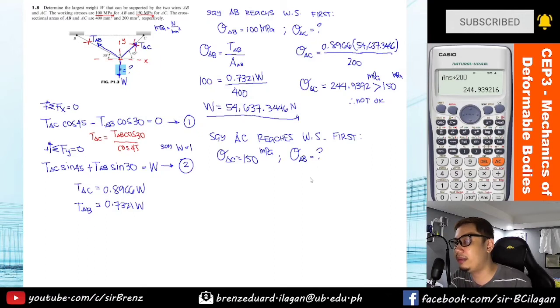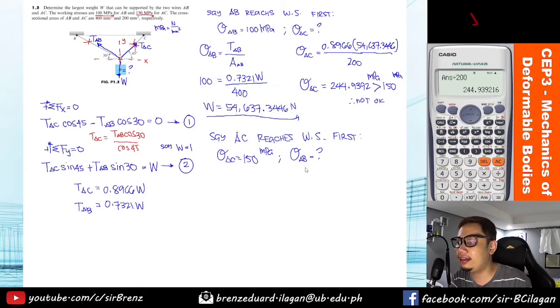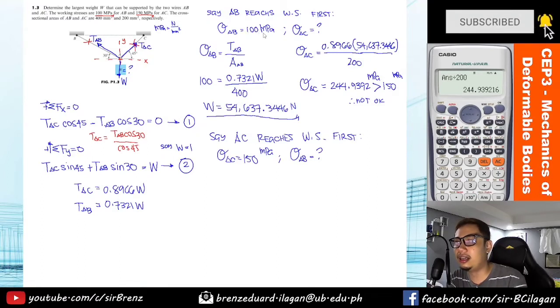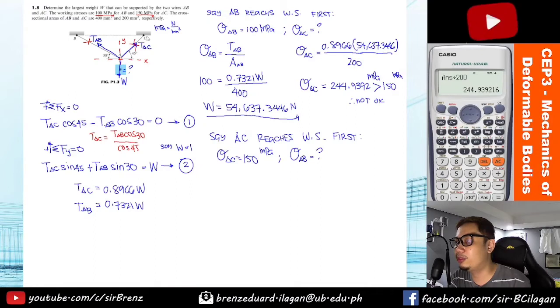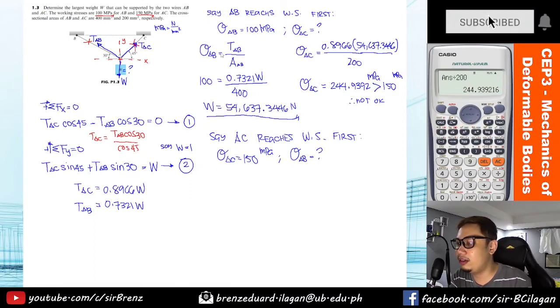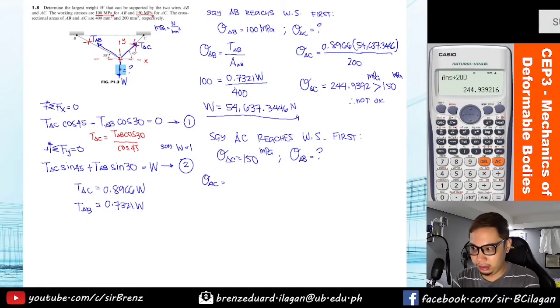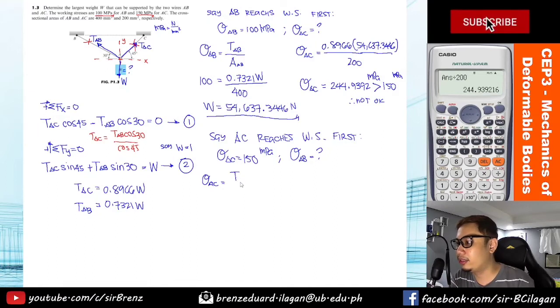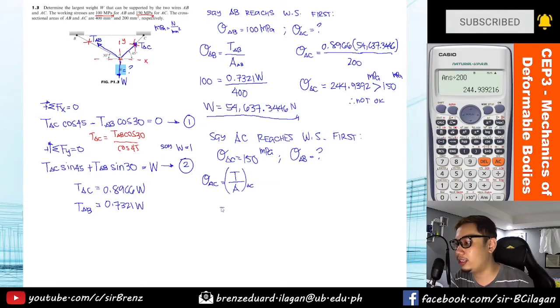Again, let me repeat: they won't reach the working stress simultaneously. One will be first, so we're checking who between the two will be first. Now when we checked AB first, that's not what happened in actual because the stress that came out is 244, which exceeds the limit. So if not AB, therefore most probably it's AC. Stress AC, same process guys. We'll check AC. So stress of AC equals tension over area.